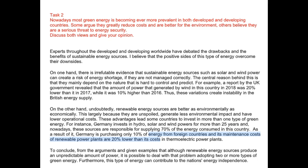'Generate less environmental impact and have lower operational costs. These advantages lead some countries to invest in more than one type of green energy.' Good. 'For instance, Germany invests in hydro, solar and wind power' — you don't need an S there, 'wind power' without an S — 'for more than 25 years.' You have to use the present perfect here, because if an action started in the past and is still continuing, you use the present perfect. So: 'Germany has invested in hydro, solar and wind power for more than 25 years.'